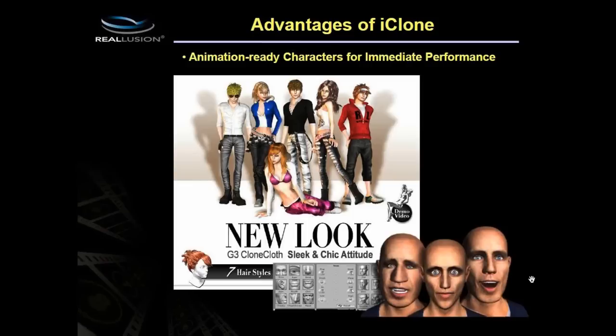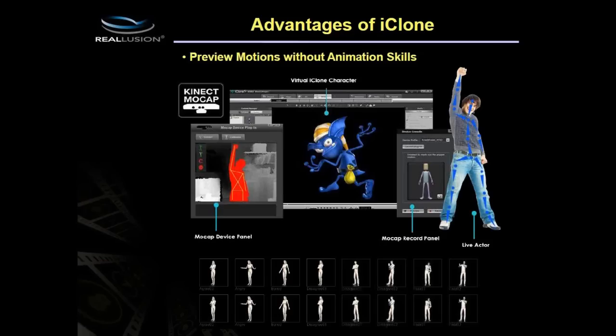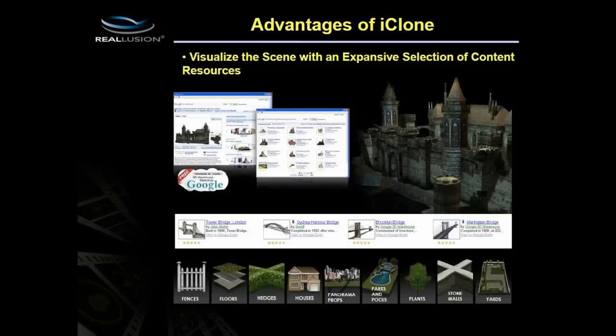You can create or purchase different clothing for your character from the content store or marketplace. You can preview motions without animation skills using the Kinect MoCap tool, or use the huge motion library — iClone 5 has 600 motions available, with unlimited additional motions purchasable from the content store or importable from online with 3D Exchange. You can also bring free models from Google Warehouse, or bring videos and images into your scene.